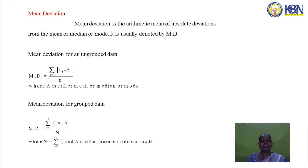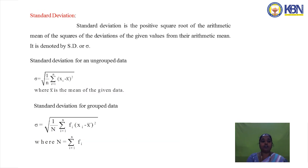For grouped data — whether discrete or continuous series — mean deviation = Σfi|xi − A| / N, where N is the total frequency and A is either the mean, median, or mode.